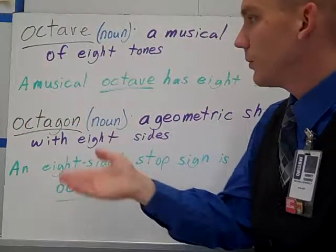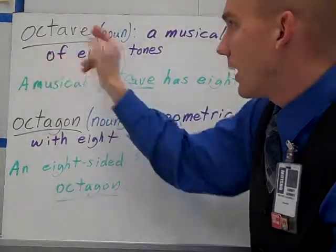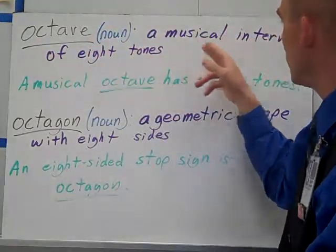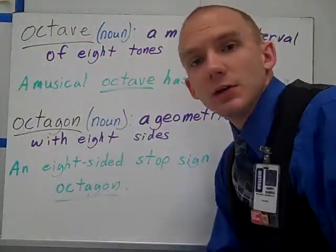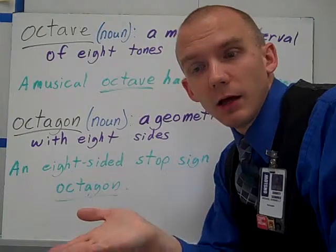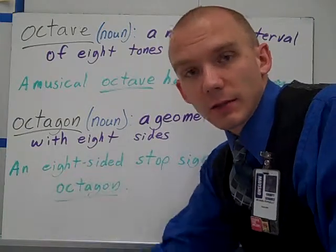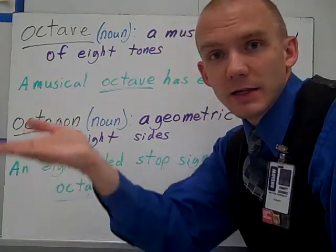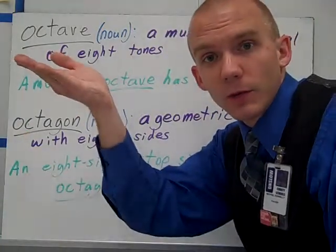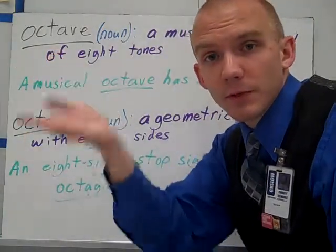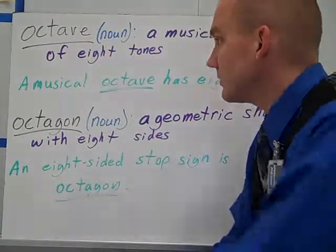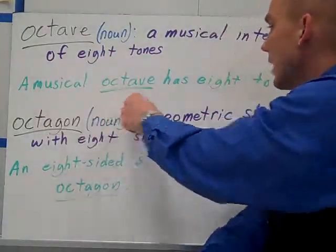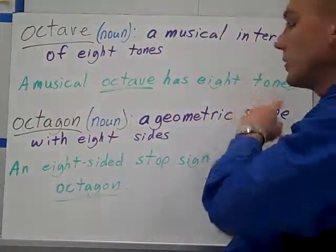Start out with OCT. You have octave as a noun. It's a musical interval of eight tones. Your general scale starts at the bottom and has eight different notes going all the way to the top, then repeats itself, and that's called an octave. A musical octave has eight tones.